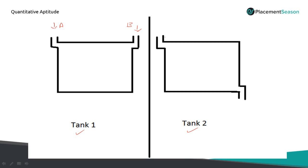Now look at the second scenario. Here, pipe A is used to fill the tank and pipe B is used to empty the tank. So pipe B is the outlet pipe and pipe A is the inlet pipe. Assume there is no outlet pipe and A takes 20 minutes to fill the tank. Now if you open the outlet pipe while A fills, it will definitely take more time. B is removing the work and A is adding the work. So if you have both inlet and outlet pipes, you use a plus for inlet and a minus for outlet.